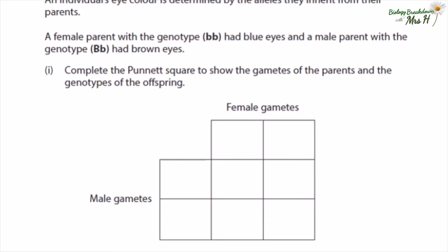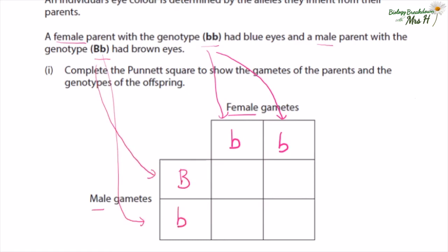A female parent with the genotype bb had blue eyes, and a male parent with the genotype Bb had brown eyes. Complete the Punnett square to show the gametes of the parents and the genotypes of the offspring. The first thing we need to do is find the female gametes, which are b and b, and put these in the correct place, then the male gametes in the correct place. I'm just showing you where to put them.